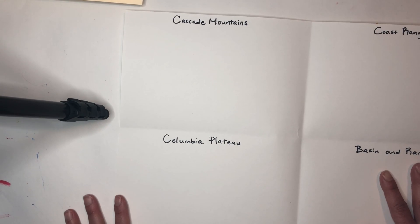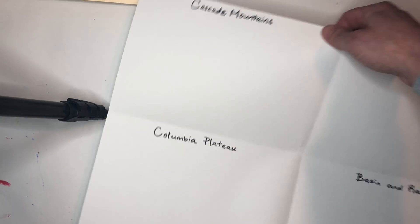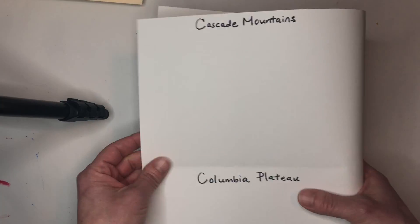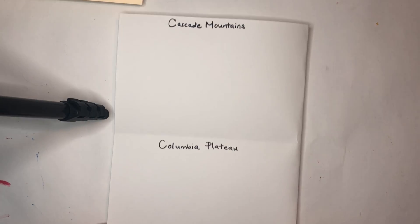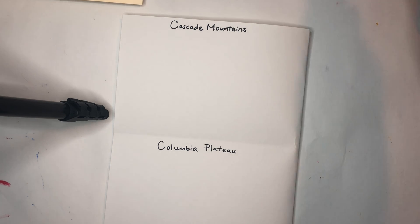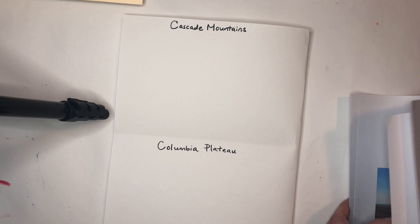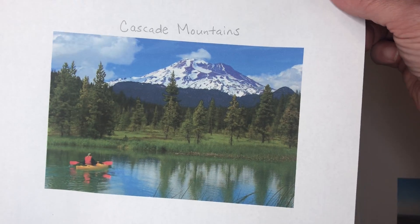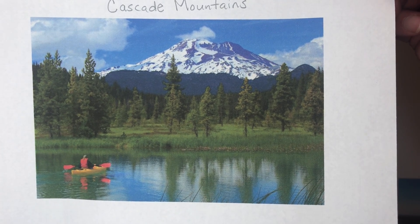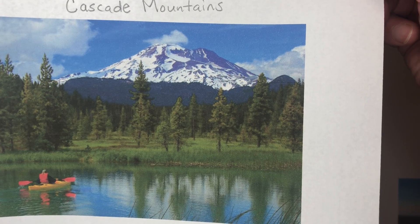Today we are going to focus on drawing our landscapes for the Cascade Mountains and the Columbia Plateau. I'm going to show you a picture for reference and I'll also post the picture so you have it to look at at home. We're looking at very green, lush, big snow-covered mountains with lots of trees.